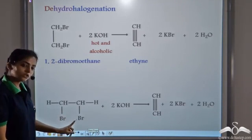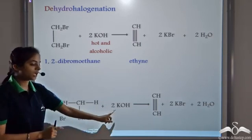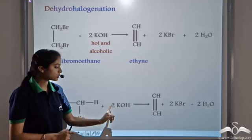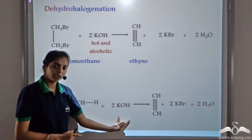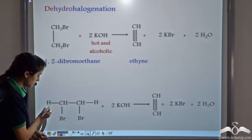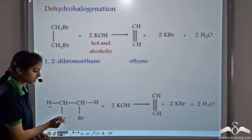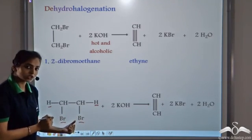We have 1,2-dibromoethane. We make it react with hot and alcoholic potassium hydroxide. When it reacts with KOH, this has a special property. It leads to dehydrohalogenation. So now, one hydrogen from this carbon and one bromine from this carbon. Similarly, one hydrogen and one bromine from the other carbon is removed.